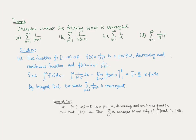Now let us use the integral test on the same examples. For part A, we suggest the function f(x) equals 1 over 1 plus x squared. This function is positive, decreasing, and continuous, and a_n equals f(n) equals 1 over 1 plus n squared. Evaluating the integral of f(x) from x equals 1 to infinity, we get pi over 2 minus pi over 4, which is a finite number. Therefore, by the integral test, the series is convergent.